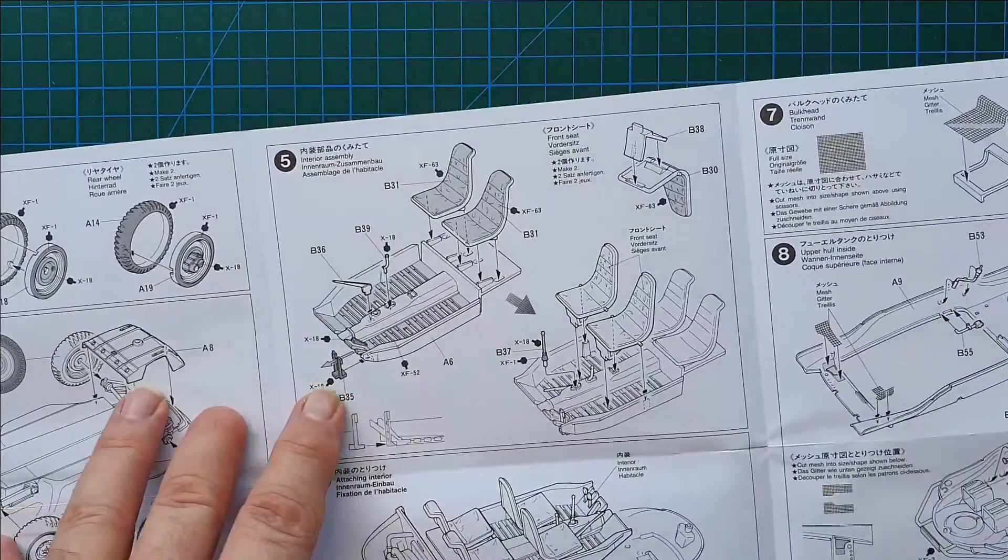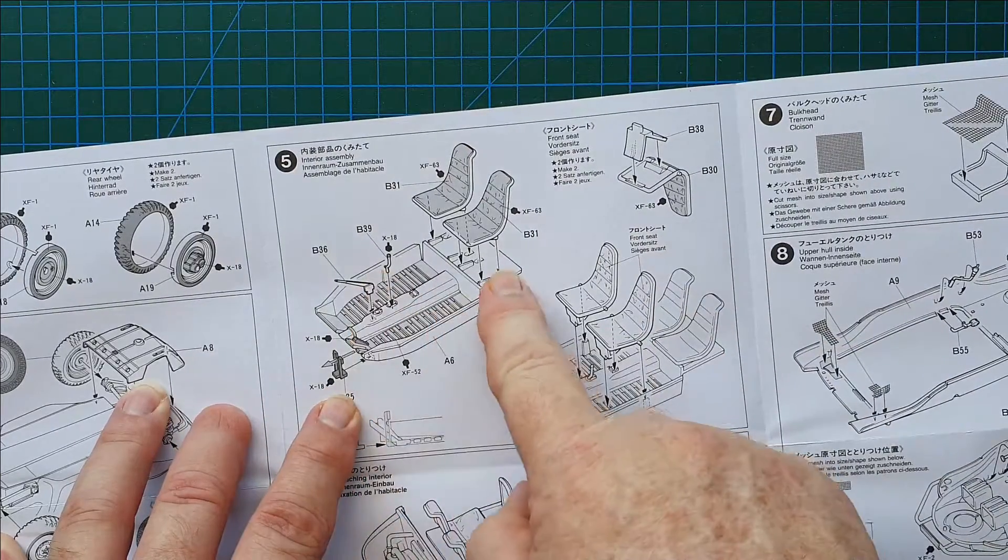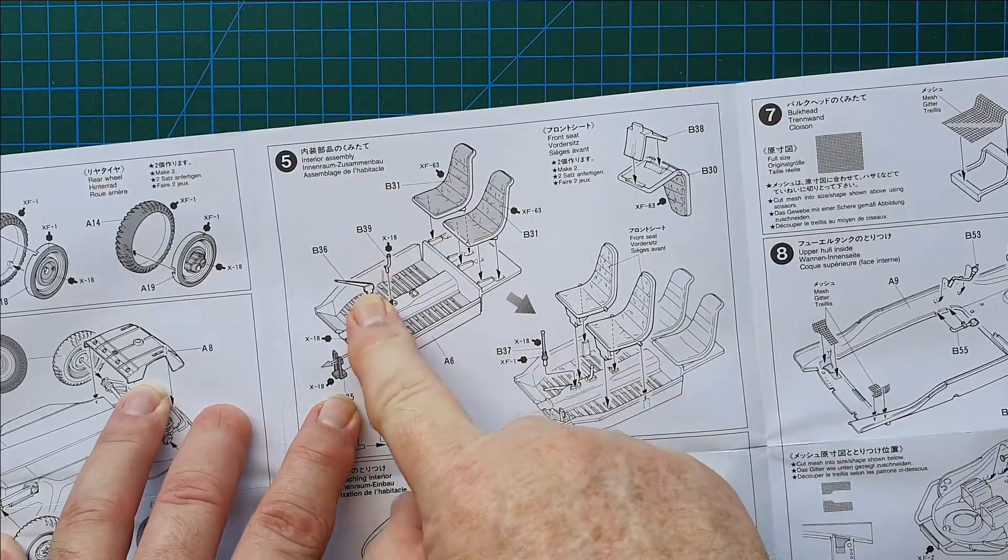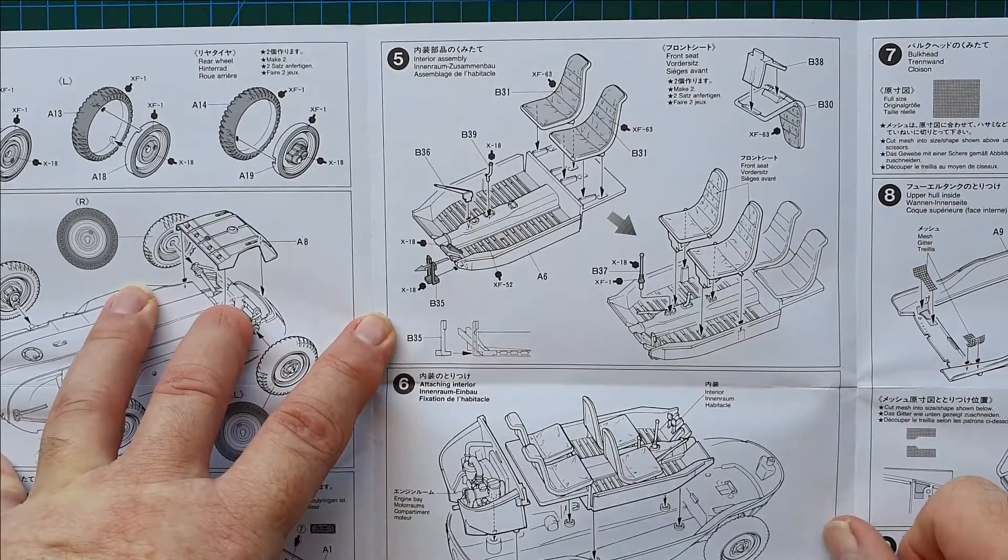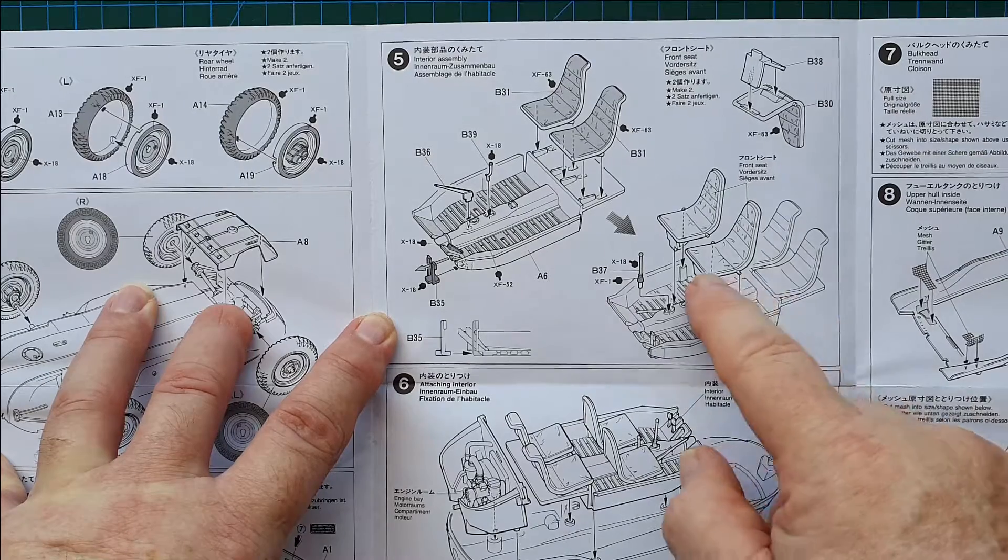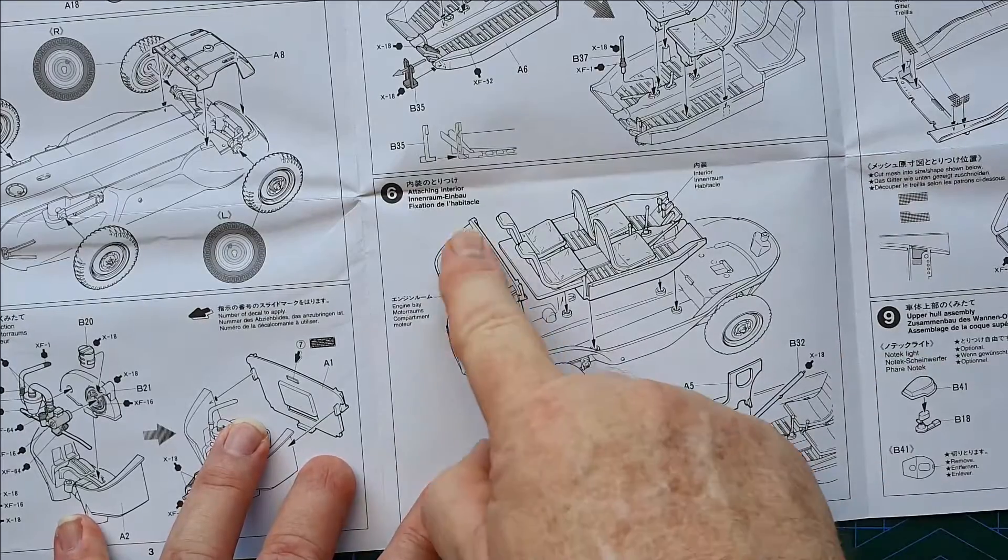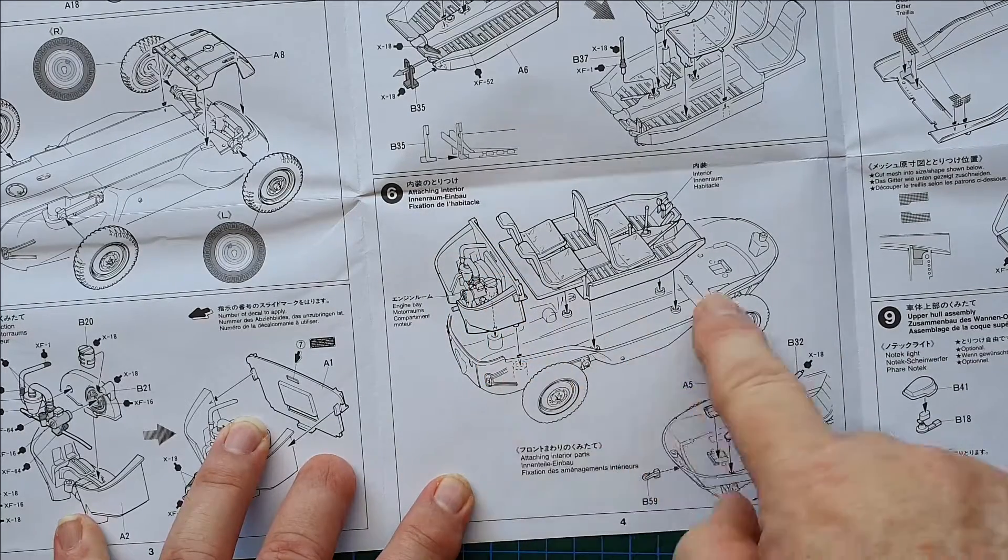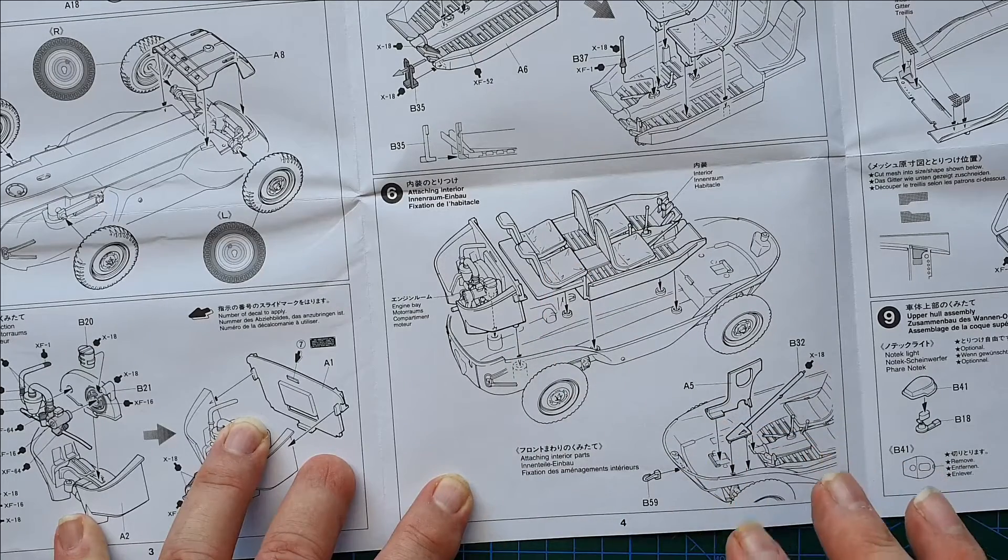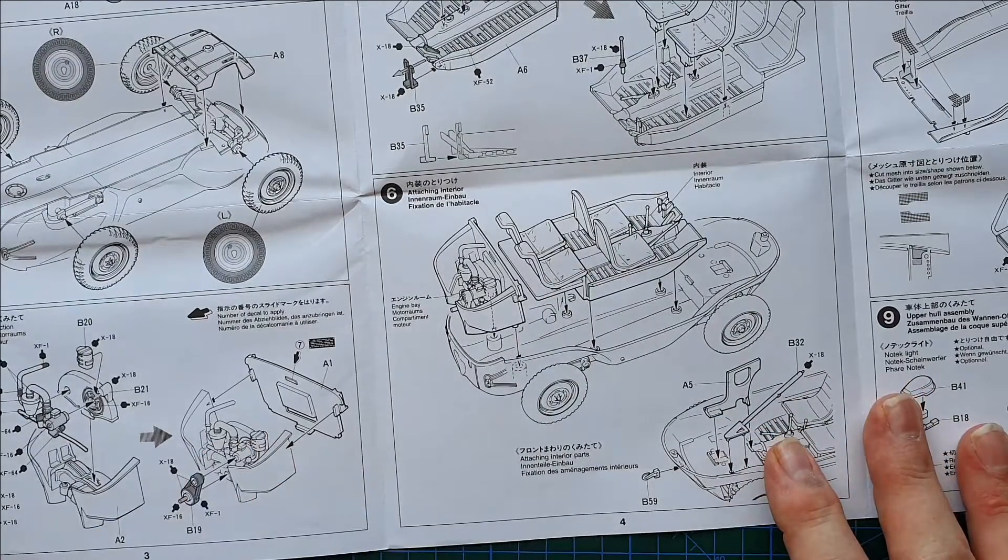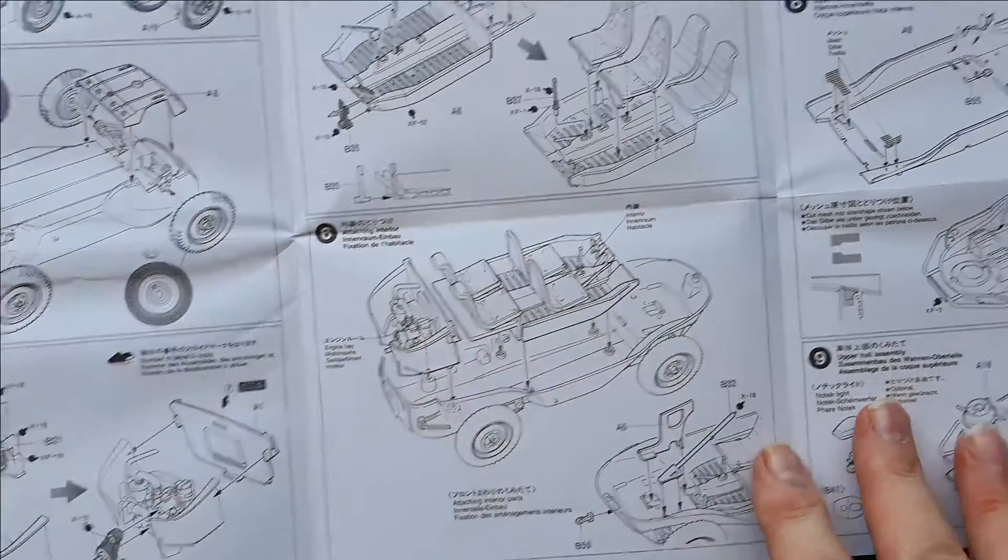Okay, so next we come to putting in the seats into the passenger compartment. It does give you color callout. In a second we'll have a look at the sprues and see if the seats actually have some kind of texture. The engine compartment goes into the body shell. The passenger compartment goes in. So this is a fairly straightforward easy build.